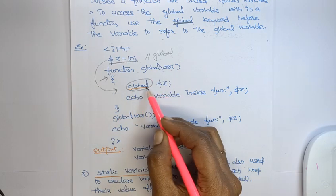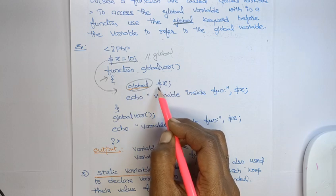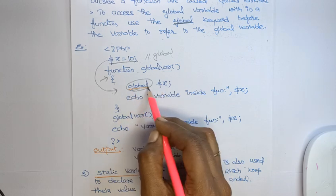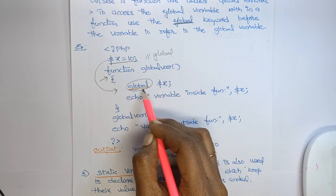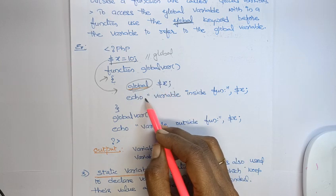So if you want to use the global variable within the function, you need to use the global keyword before the variable name. So global dollar x. Now I want to print the value of this x.